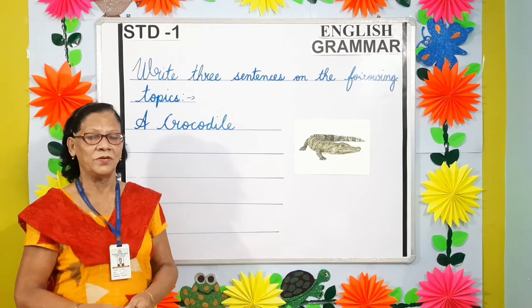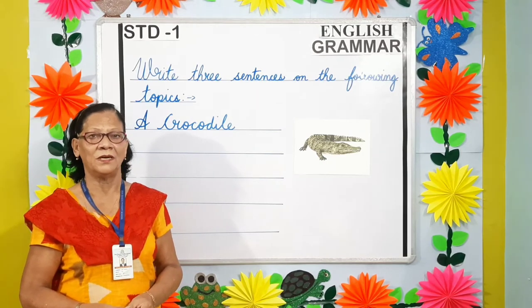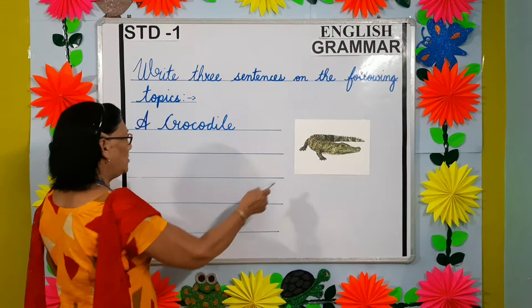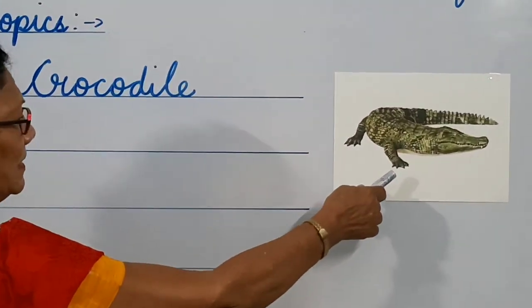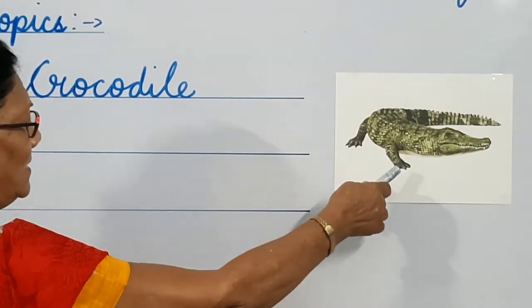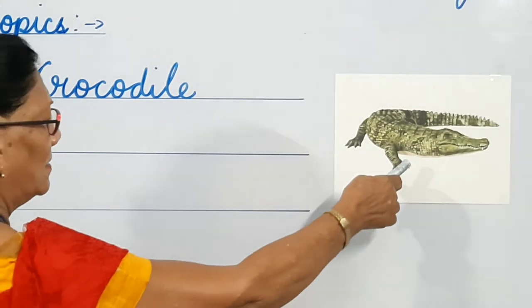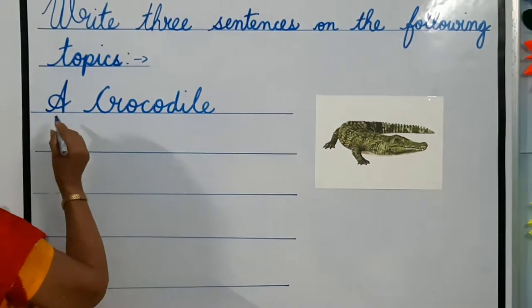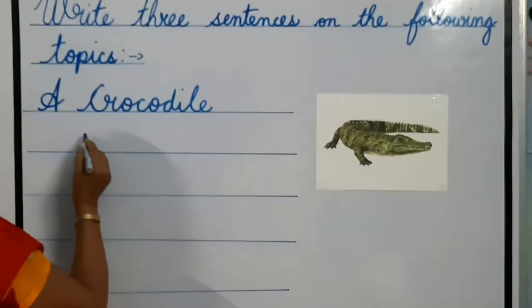Now students, moving on to the third topic. Students, can you recognize this picture? What is it? It is a crocodile. Now we'll write three sentences on a crocodile.